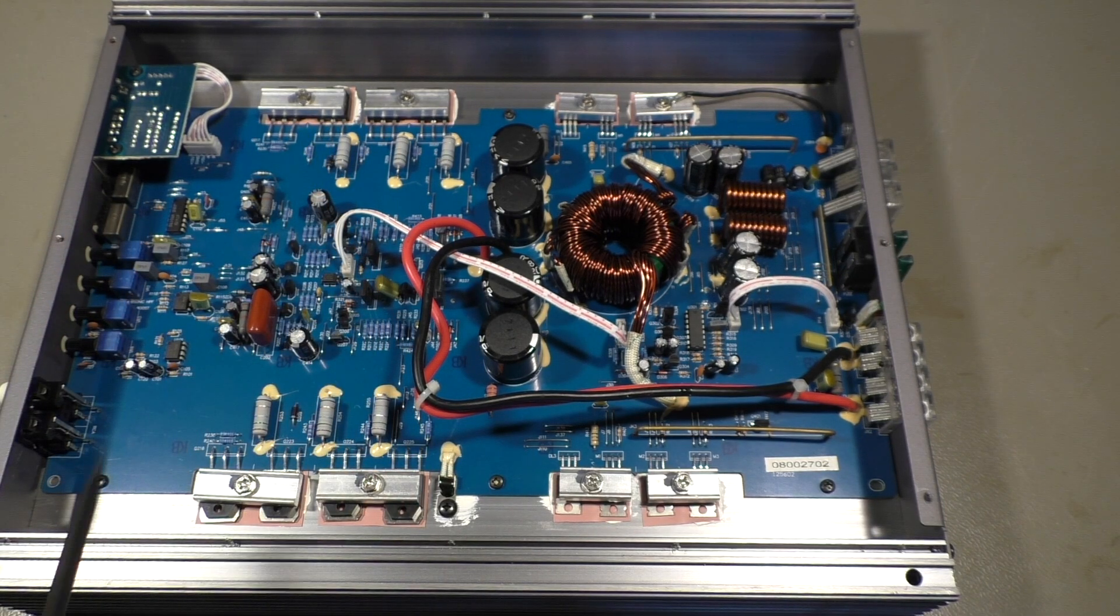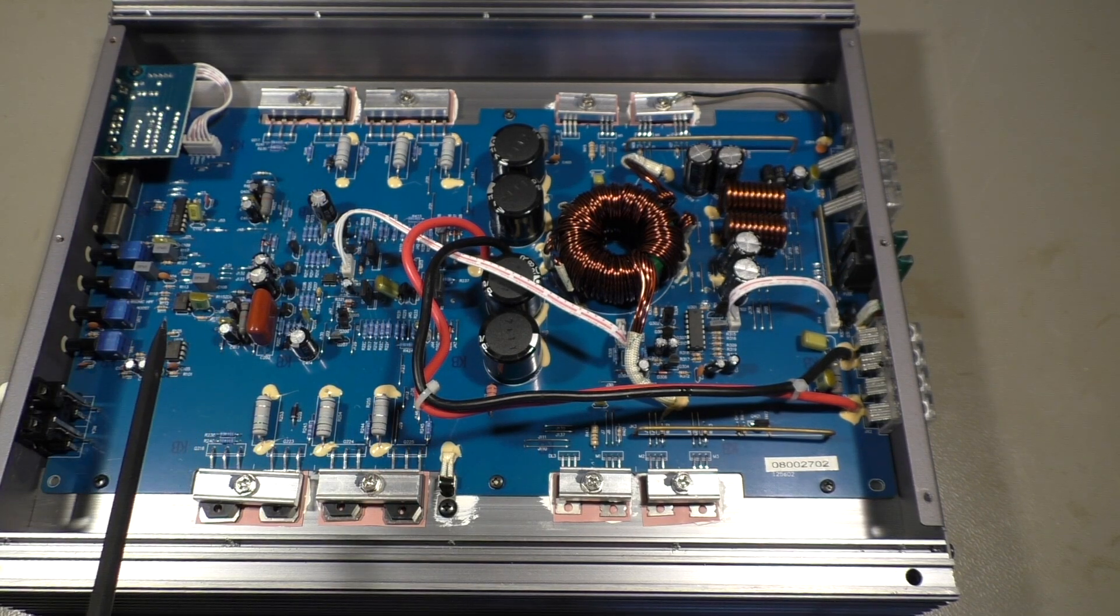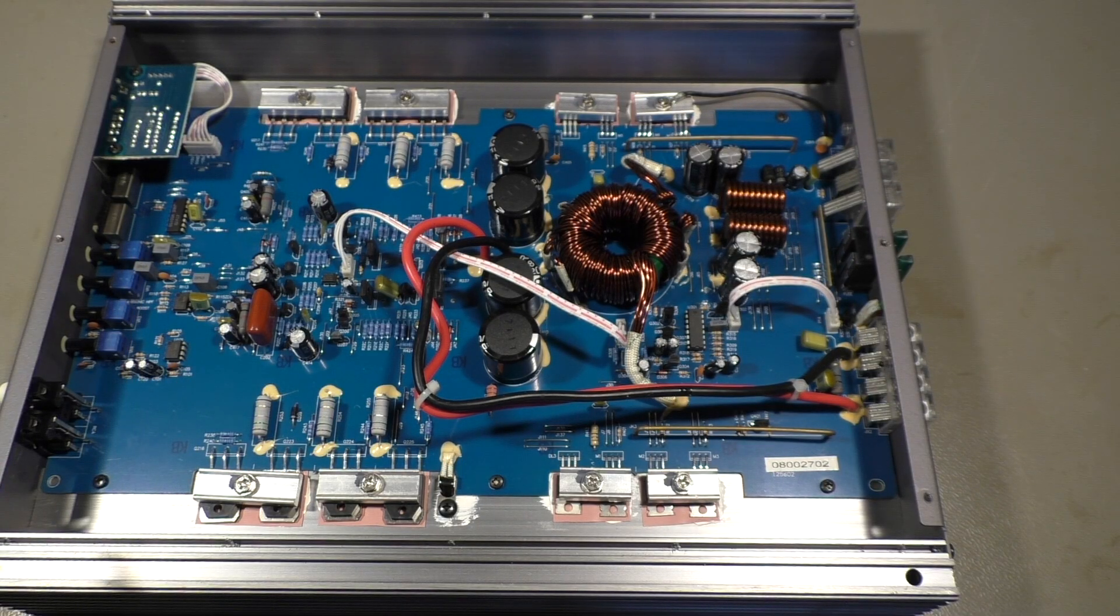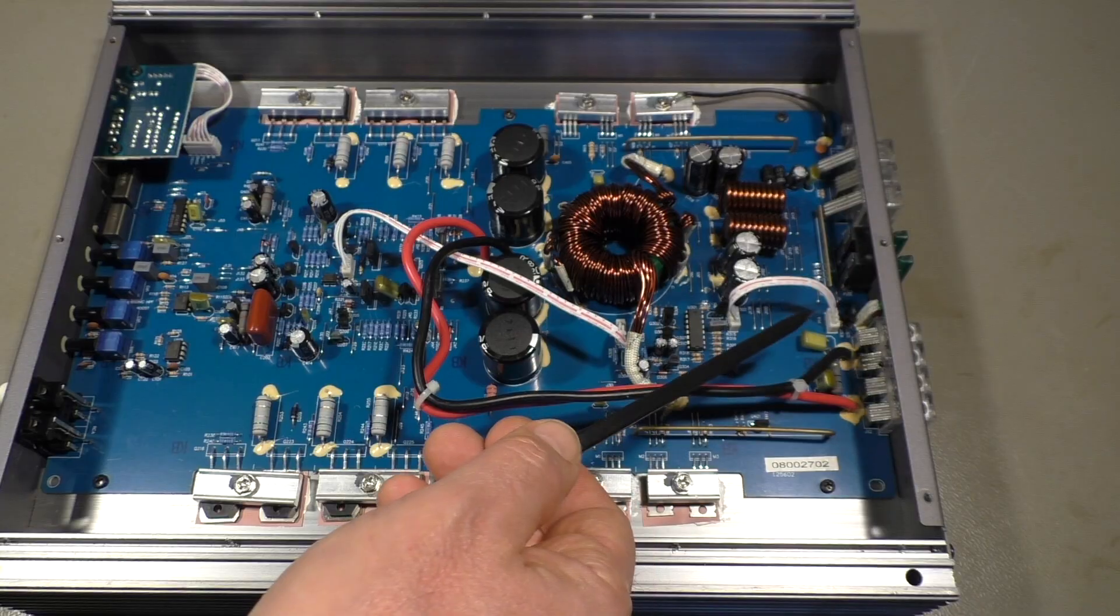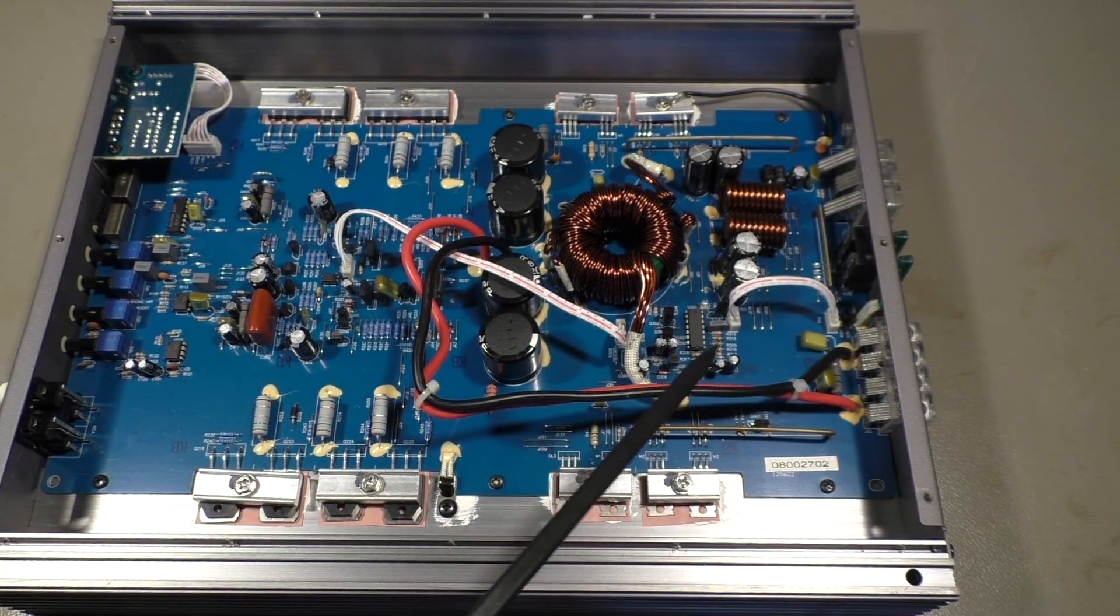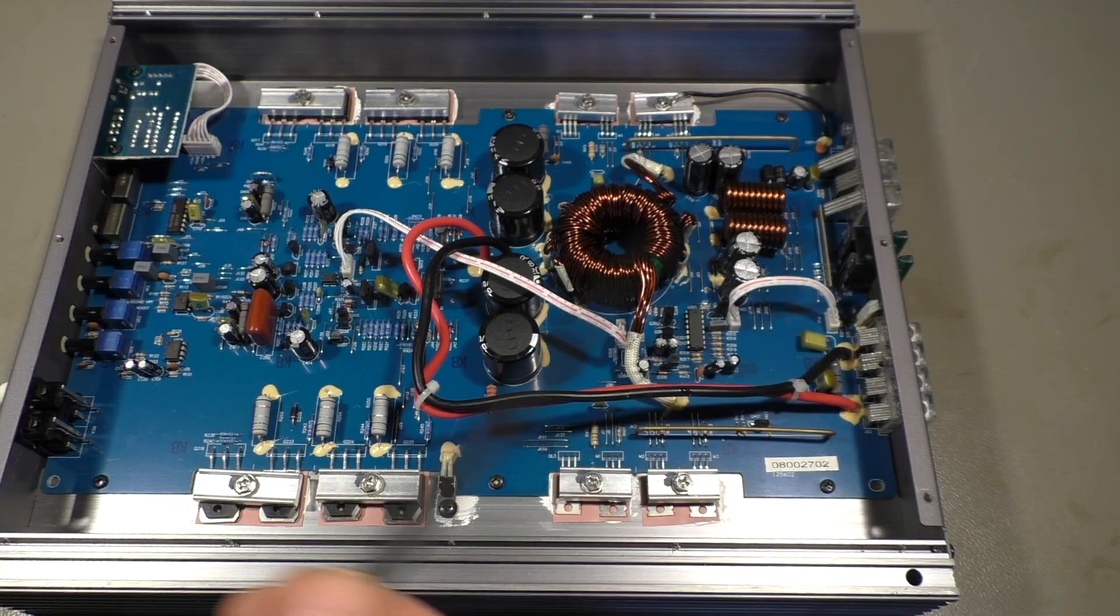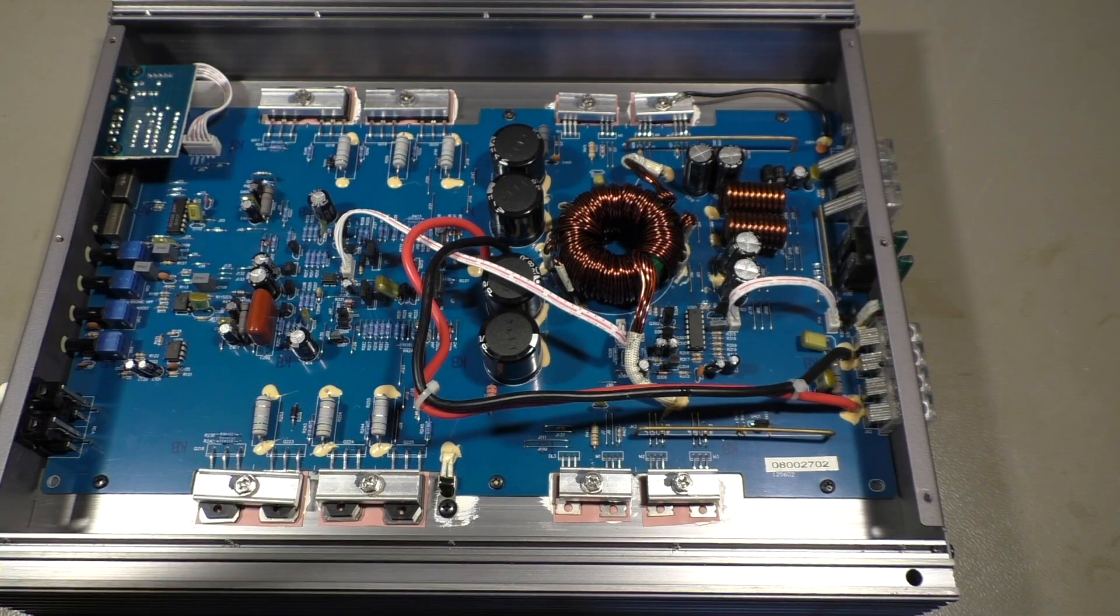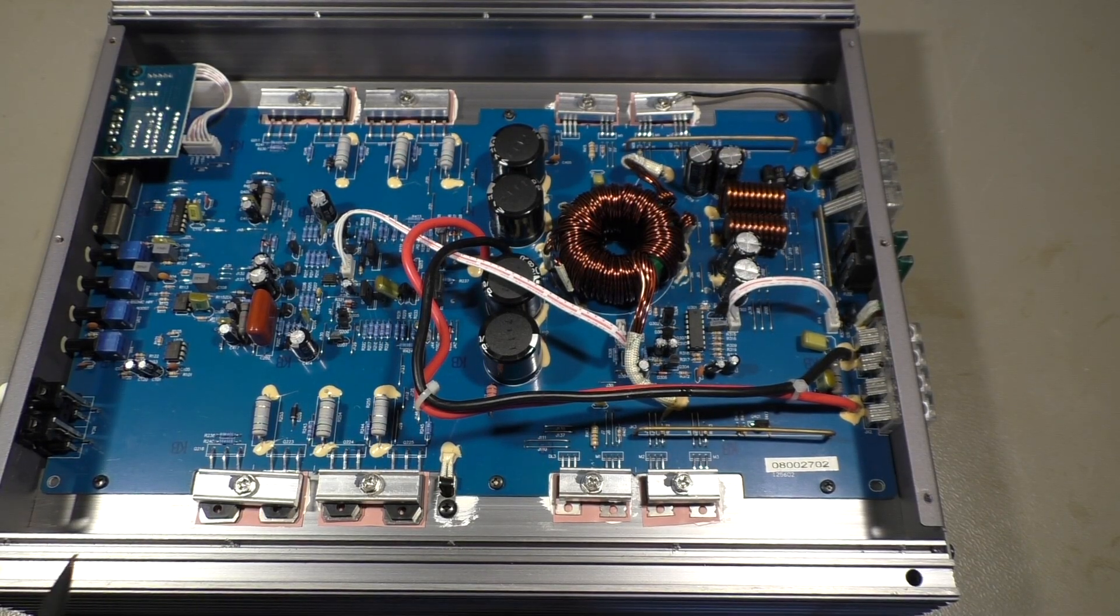And by the way I forgot to mention, this is only a mono amplifier, so it's only for a subwoofer, for one speaker. It has two speaker outputs but that is meant to connect two speakers in parallel to get these two ohms instead of four ohms.